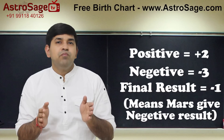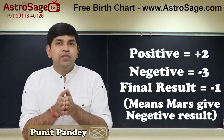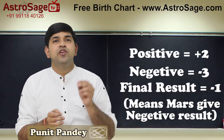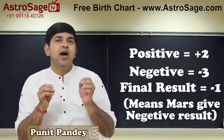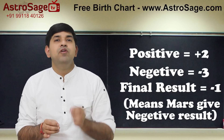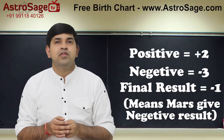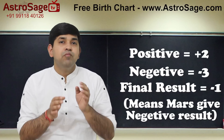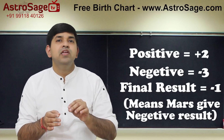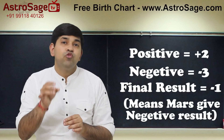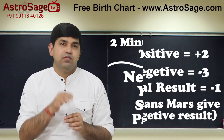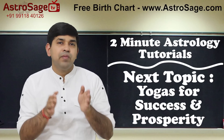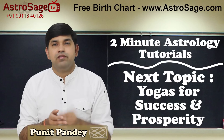If we sum all these points up, we get a negative value. This shows that overall Mars is going to give malefic results. It means Mars will harm its own significances as well as those houses that it owns. We should analyze the rest of the planets in the same fashion.